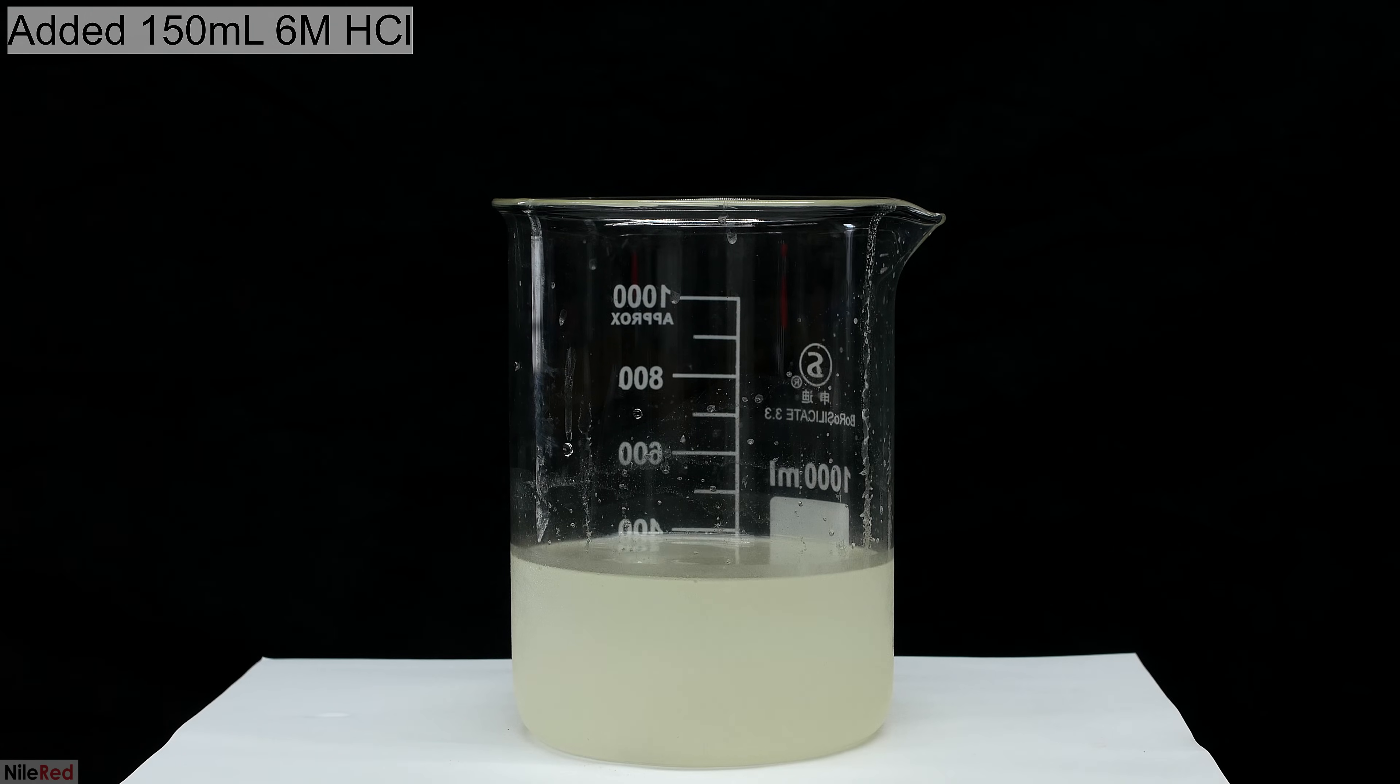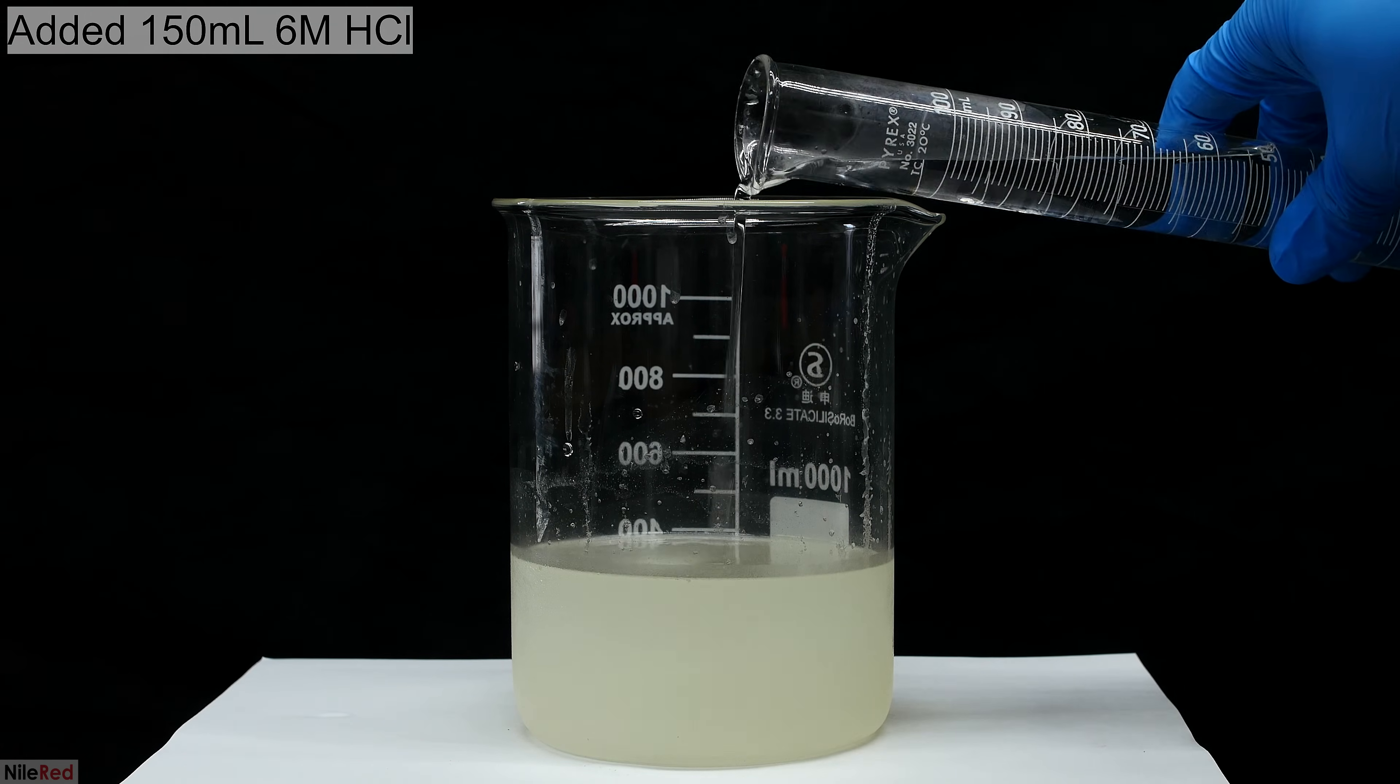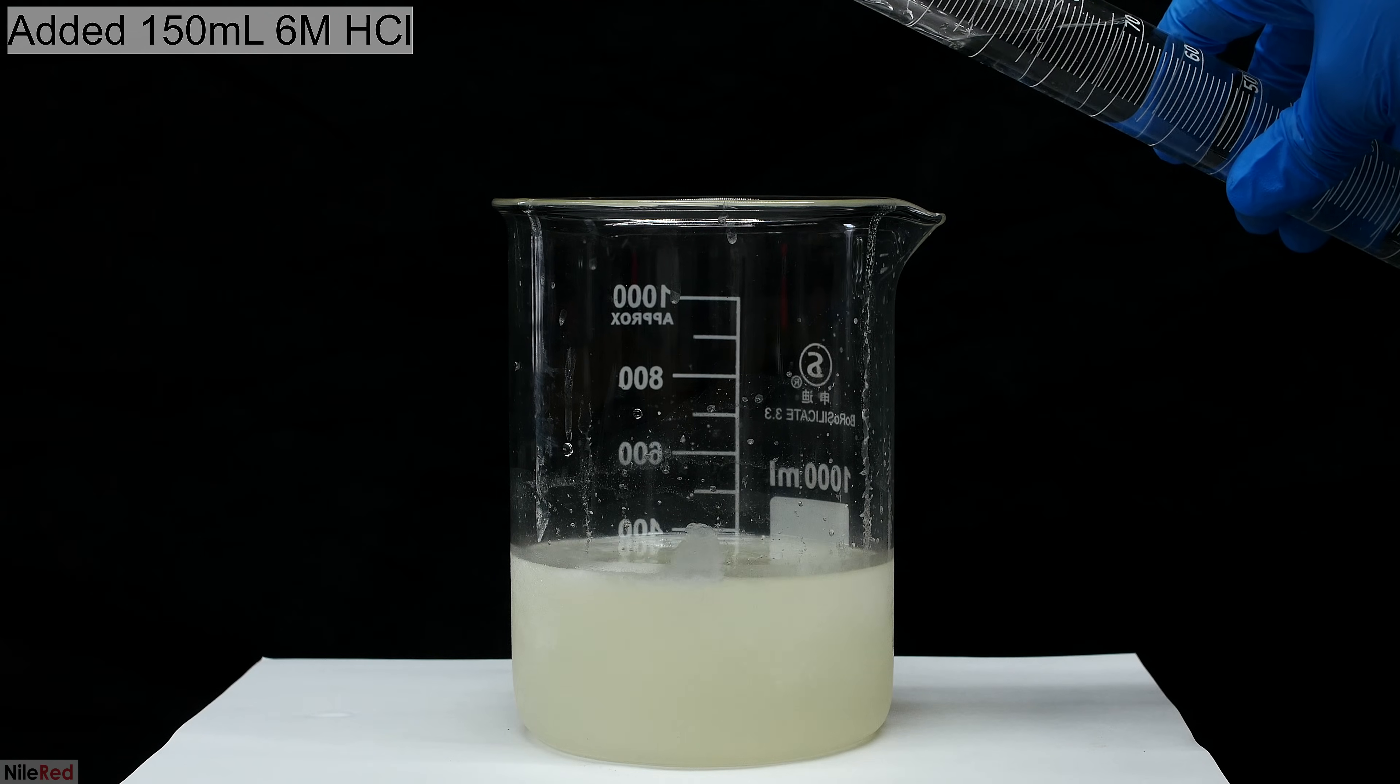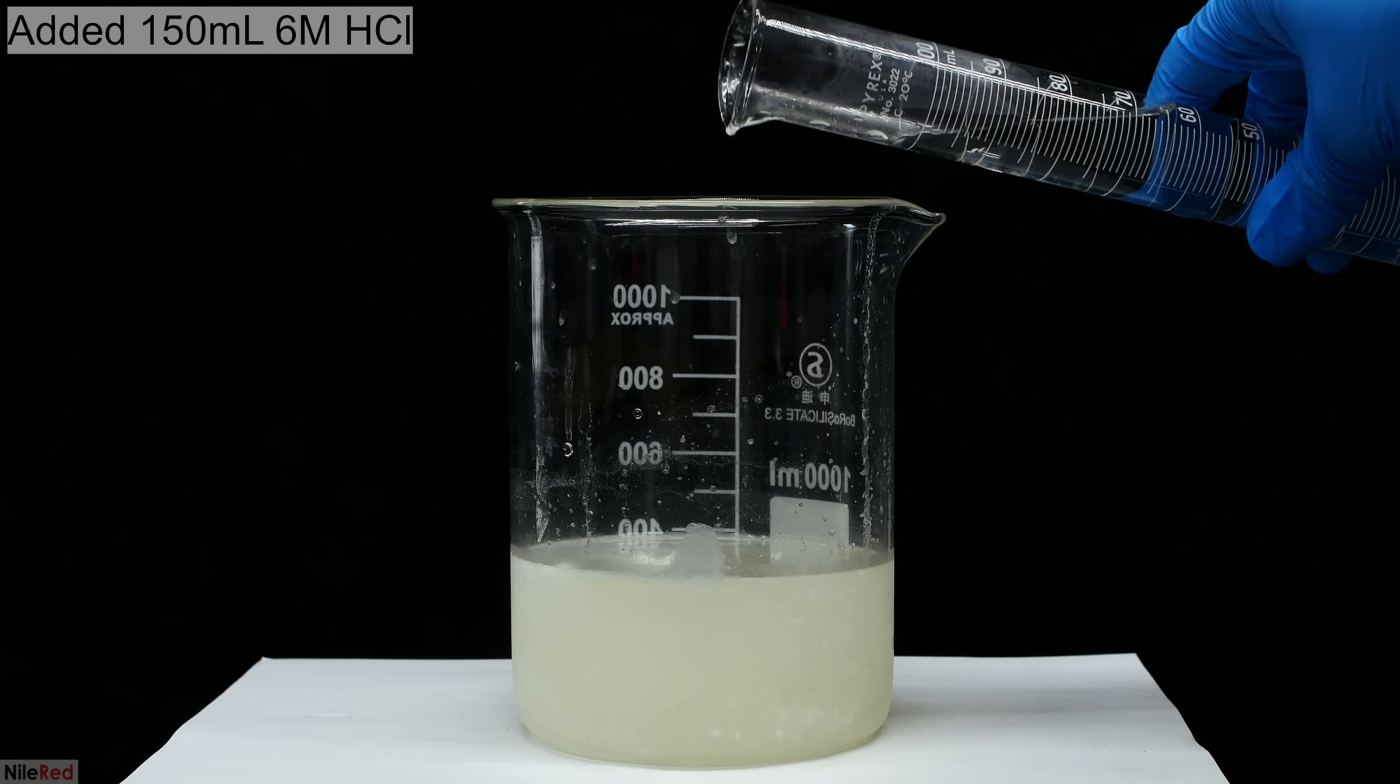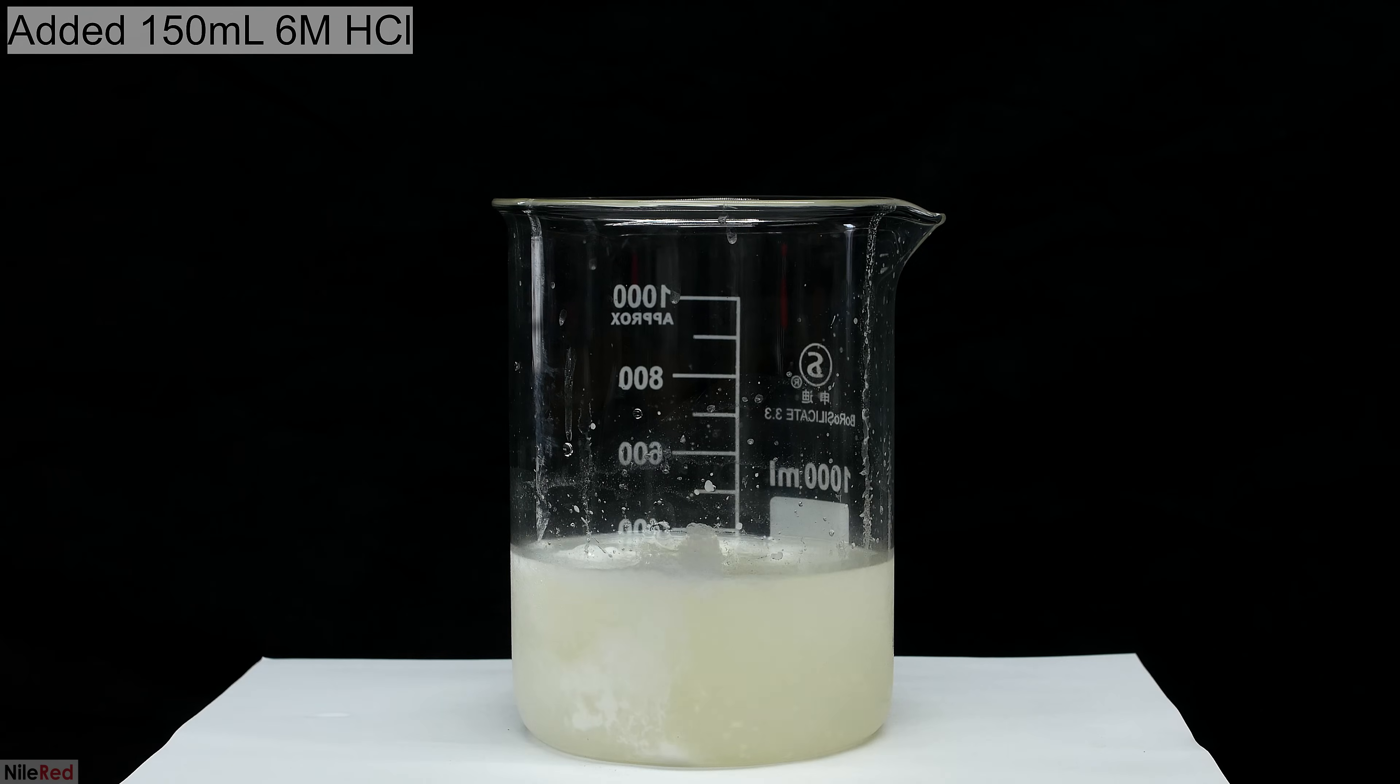To the watered down reaction mixture, I then start to add some 6 molar hydrochloric acid. The moment that the hydrochloric acid is added, you can see a white precipitate forming. The white precipitate is our desired product, trans-cinnamic acid.